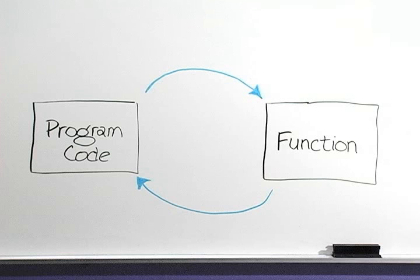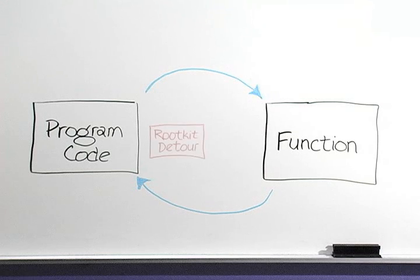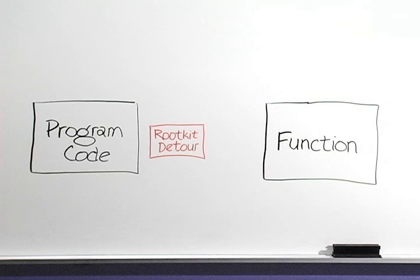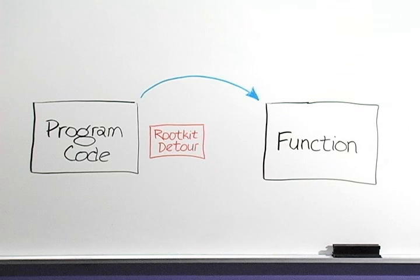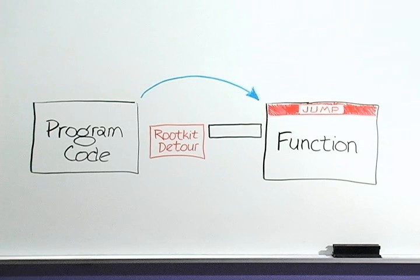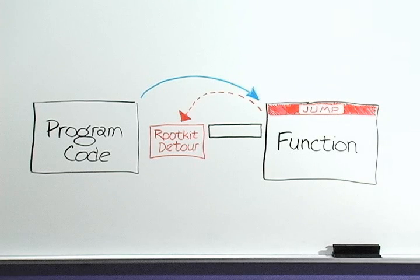The function always returns its results to whatever program made the request — at least that's how it should work. Now let's add a rootkit. In this example, the function code provides a list of what files are in a directory. At some point, the program needs a directory listing, so it calls the function. However, the rootkit has taken the first five bytes of the function code and moved them to a memory location the attacker chose, replacing those bytes with a jump instruction. When the program's request hits the start of the function, the jump makes it go to the memory location of the rootkit's detour function.